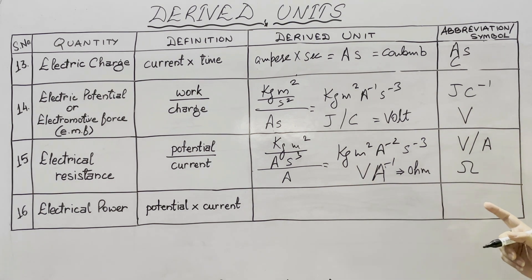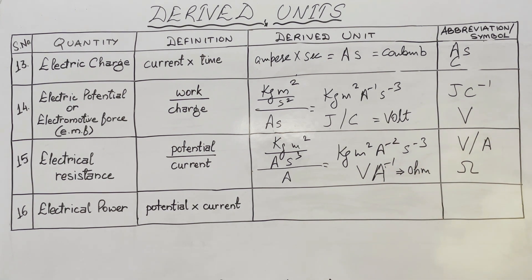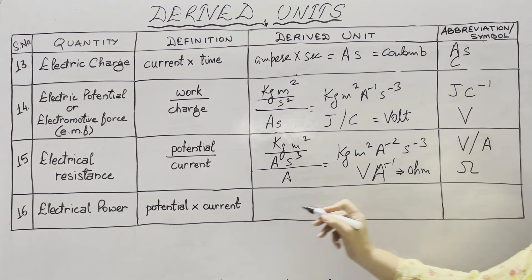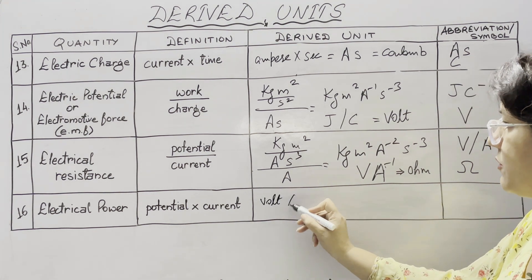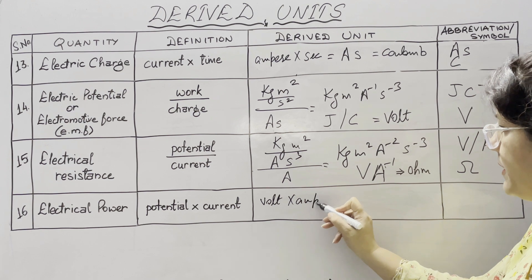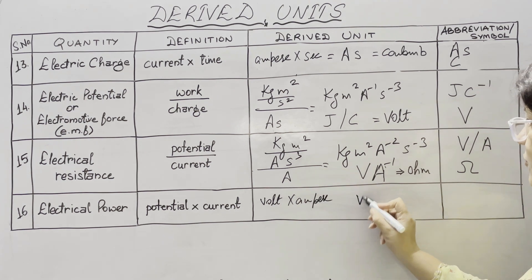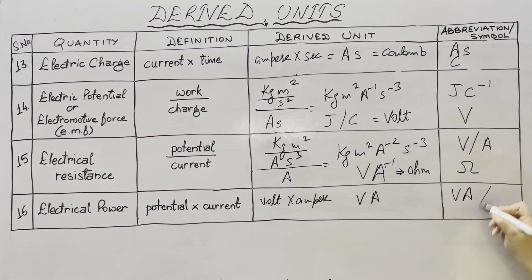The next physical quantity is electric power. It is the product of potential and current. The SI unit of potential is volt and the SI unit of current is ampere, so the unit of electric power is volt into ampere, which we can also write as watt.